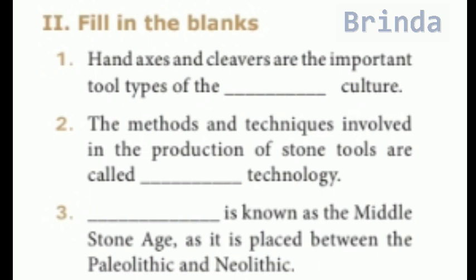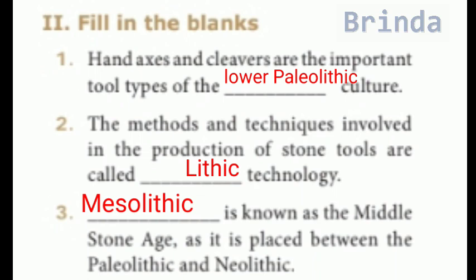Fill in the blanks. First: hand axes and cleavers are the important tool types of the Lower Paleolithic culture. Second: the methods and techniques involved in the production of stone tools are called Lithic technology. Third: Mesolithic is known as the Middle Stone Age as it is placed between the Paleolithic and Neolithic.